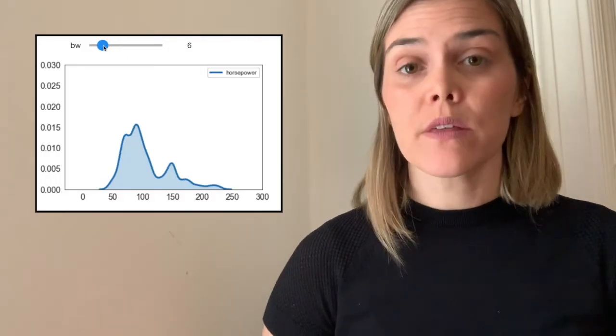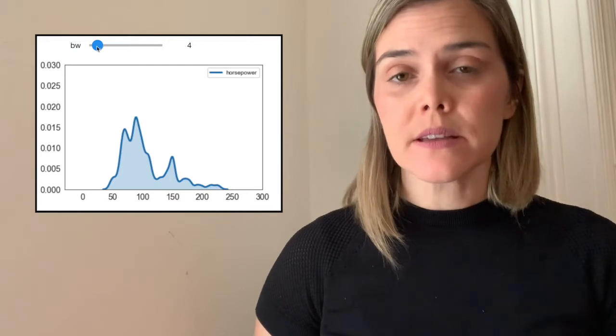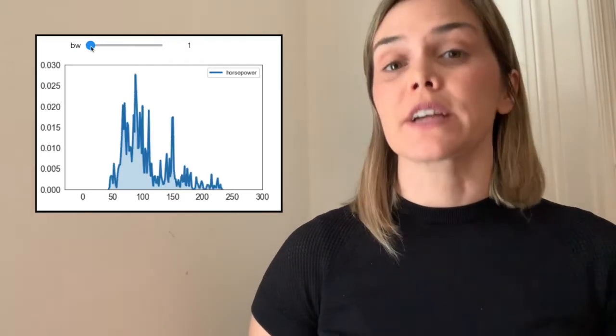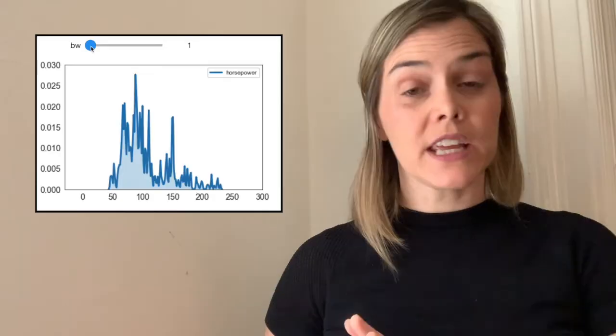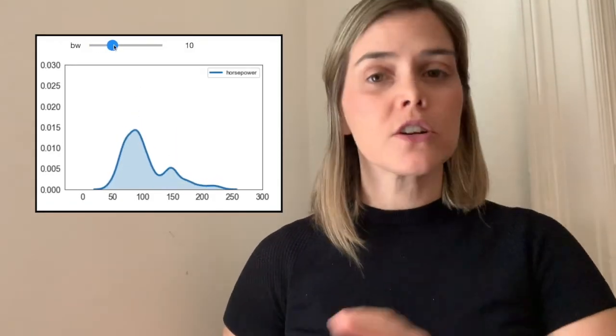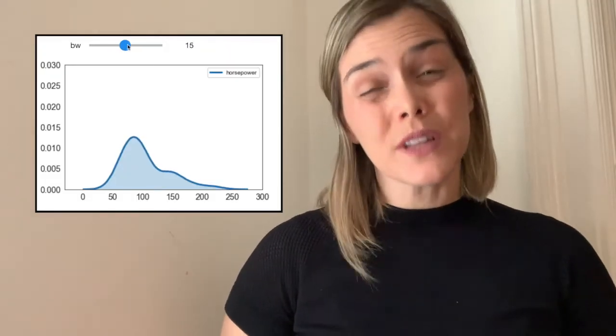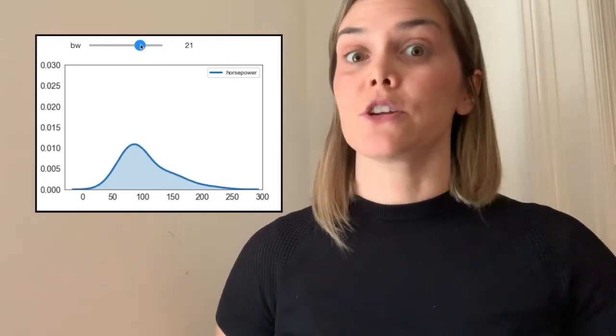If you start decreasing the bandwidth, you'll start to see more and more jagged peaks — that's really just increasing the variance of your KDE. On the other hand, if you increase the bandwidth too much, you'll start to see that curve smooth out, and you will even possibly lose out on the modes in your data set, especially if you have more than one peak. The default bandwidth method is actually Scott, or you can switch that to Silverman — those are just methods for estimating the appropriate bandwidth for your data set. Those are usually pretty good starting places, though sometimes you might want to decrease that bandwidth even further, especially if you have data with multiple different modes.